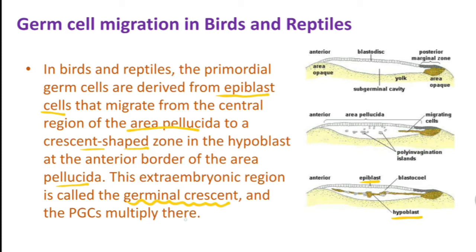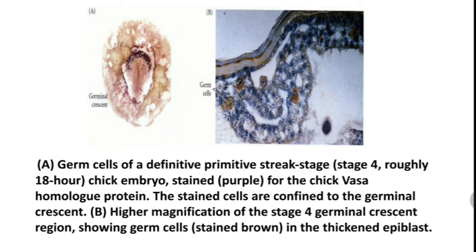In birds and reptiles, PGCs multiply in the area called the germinal crescent. The first image shows a germ cell of a chick embryo showing the germinal crescent, and the second image shows the thickened epiblast region with the germ cells.